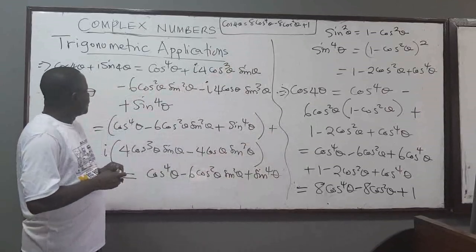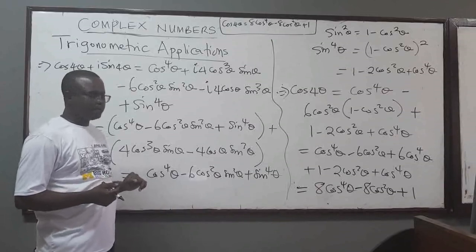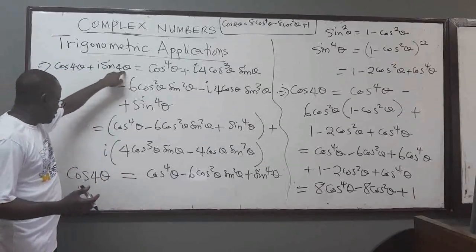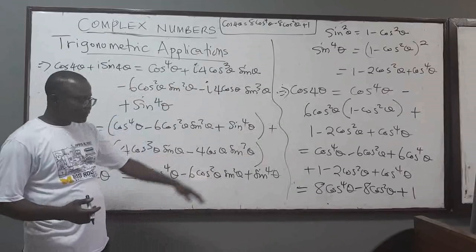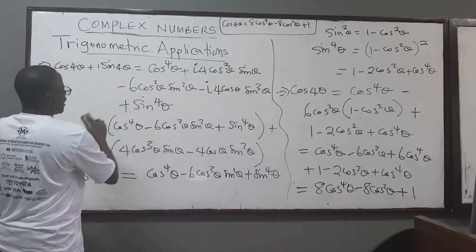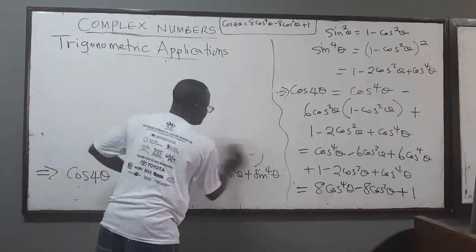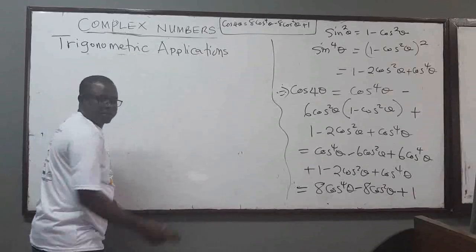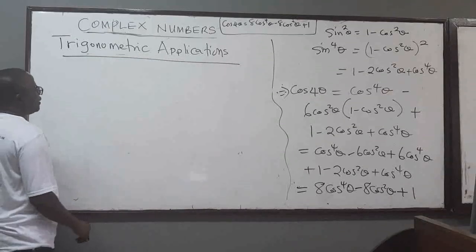That is how you can use De Moivre's theorem to prove trigonometric identities. If you were asked to find sin(4θ), you do the same thing — apply De Moivre's theorem and do all the mathematical gymnastics and you get there. Now I'll move on to a second application of De Moivre's theorem.